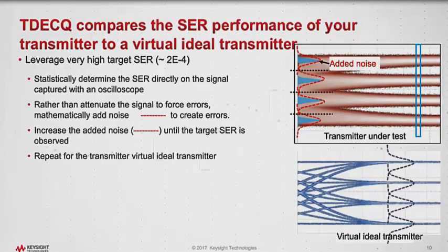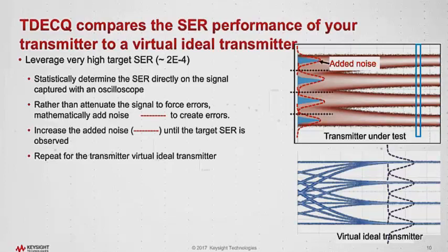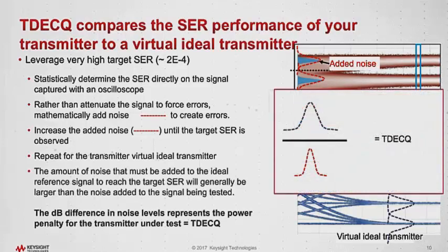The next step — done entirely in post-processing — is to repeat that process for a virtual ideal transmitter. You don't physically need this; it's all done mathematically. We add noise to that signal with the same OMA as your DUT until we achieve the target SER. The amount of noise added to the ideal reference to reach that SER will be larger than the amount needed for your DUT, and the difference in those noise levels represents TDEC-Q. This makes it a fairly fast and easy measurement to perform.